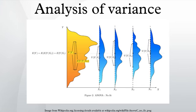Comparisons, which are most commonly planned, can be either simple or compound. Simple comparisons compare one group mean with one other group mean. Compound comparisons typically compare two sets of group means where one set has two or more groups. Comparisons can also look at tests of trend, such as linear and quadratic relationships, when the independent variable involves ordered levels. Following ANOVA with pairwise multiple comparison tests has been criticized on several grounds. There are many such tests and recommendations regarding their use are vague or conflicting.